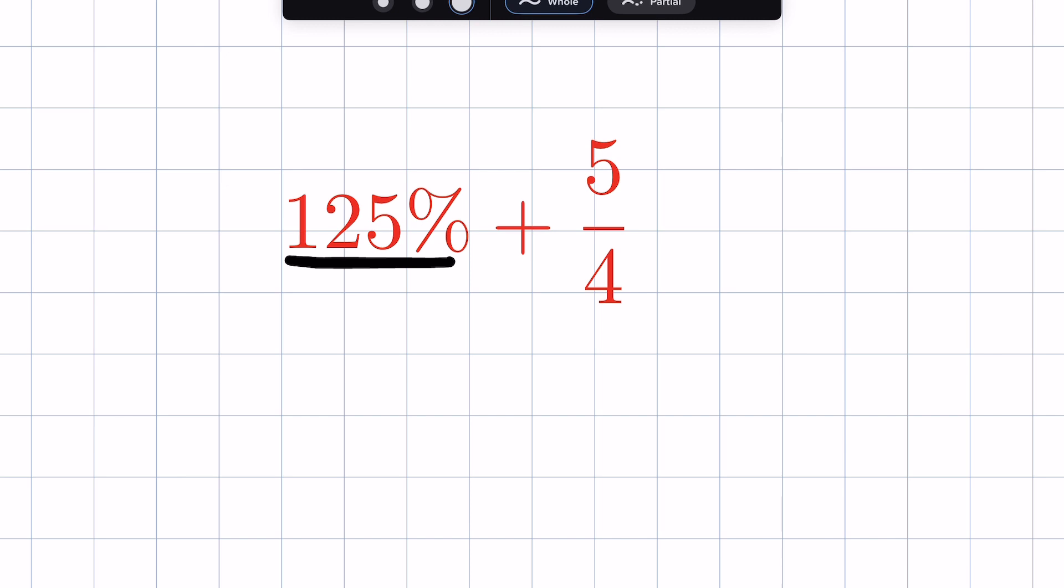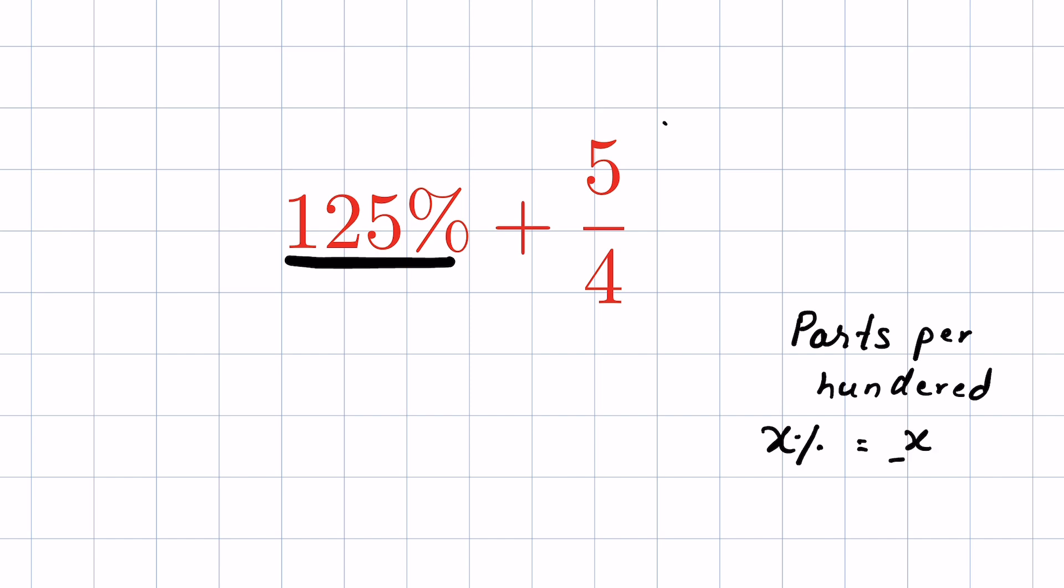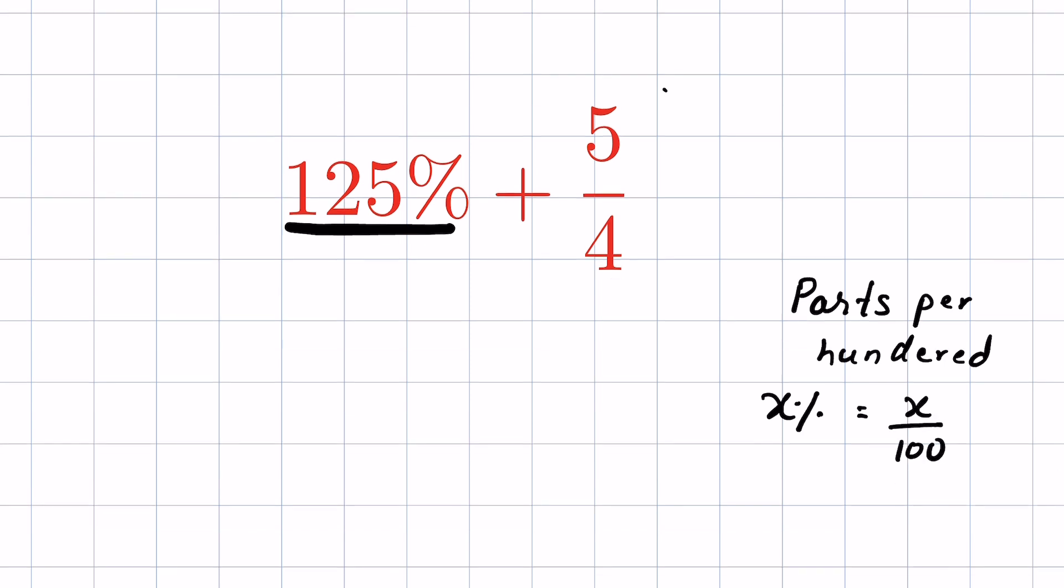Percentage means parts per 100. x percent means x upon 100. So 125 percent means 125 upon 100 plus 5 upon 4.